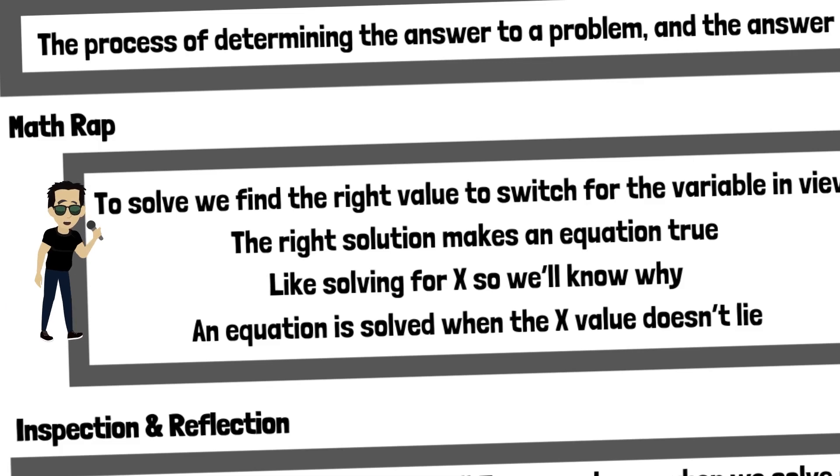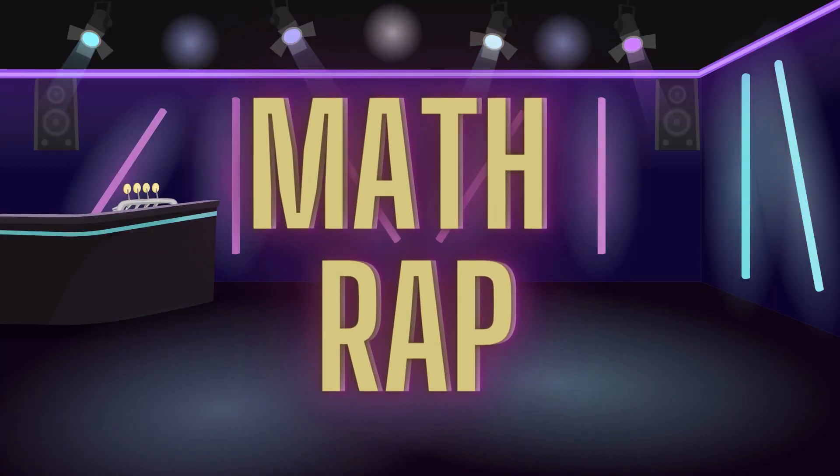To solve, we find the right value to switch for the variable in view. The right solution makes an equation true, like solving for X. So we'll know why an equation is solved when the X value doesn't lie.